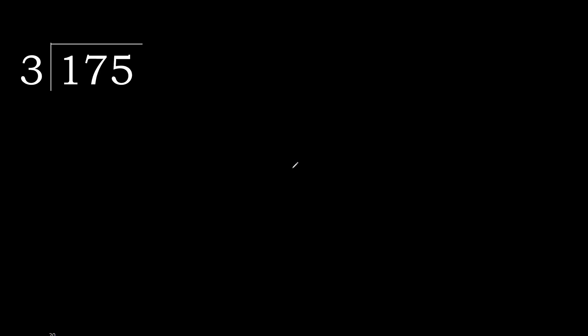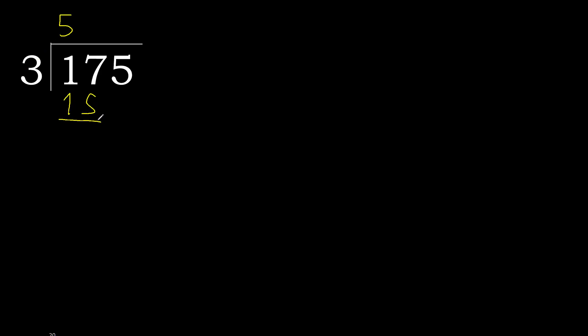175 divided by 3. 1 is less, so next we take 17. 17 is not less. 3 multiplied by which number is nearest to 17 but not greater? 3 multiplied by 6 is 18 — 18 is greater. 3 multiplied by 5 is 15 — 15 is not greater, so 5 is our digit.